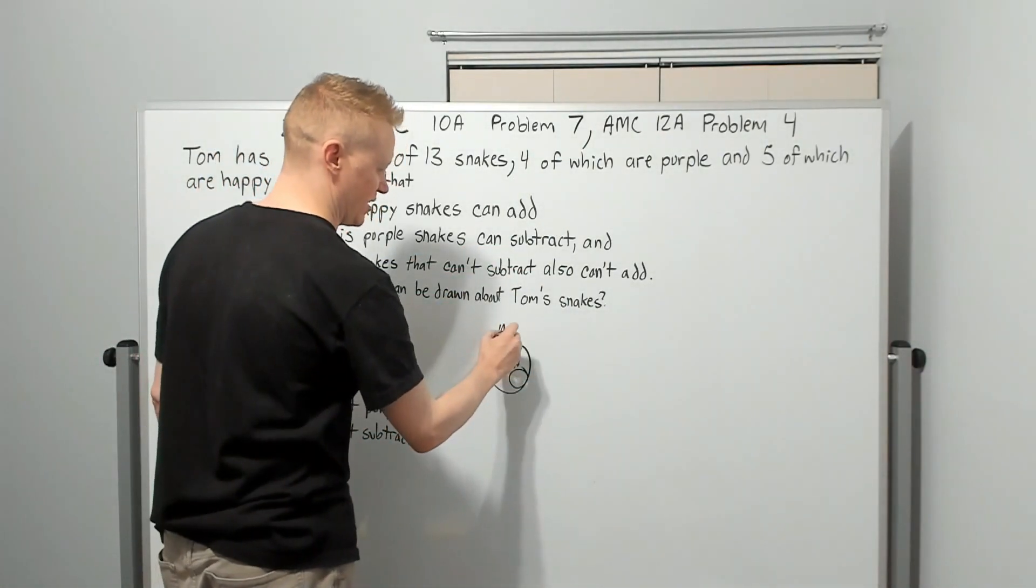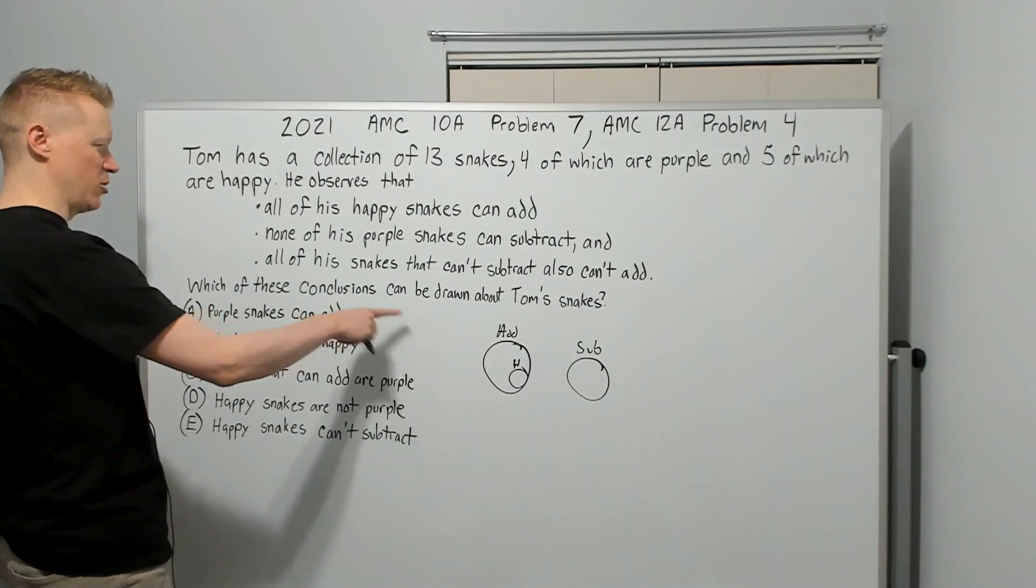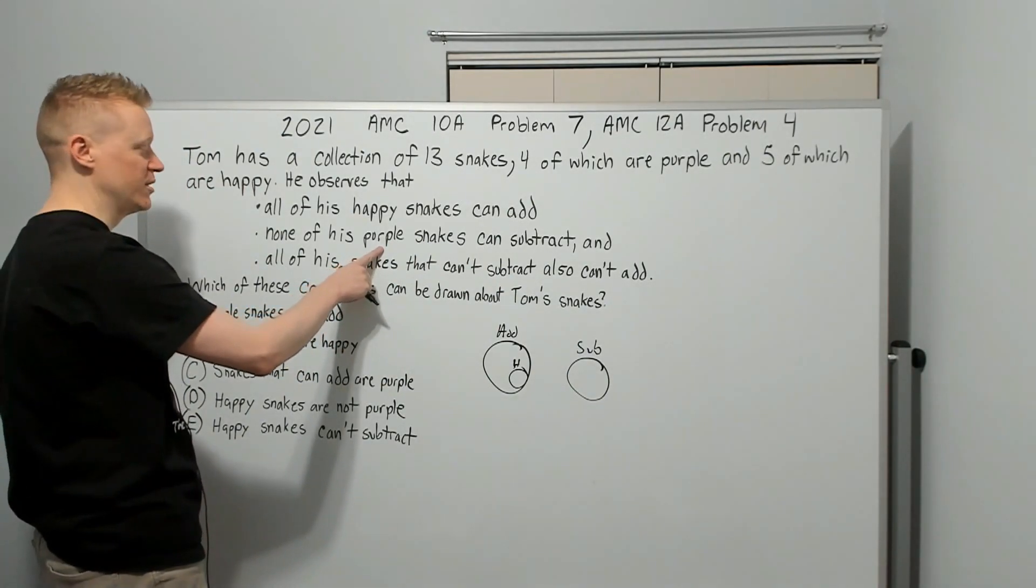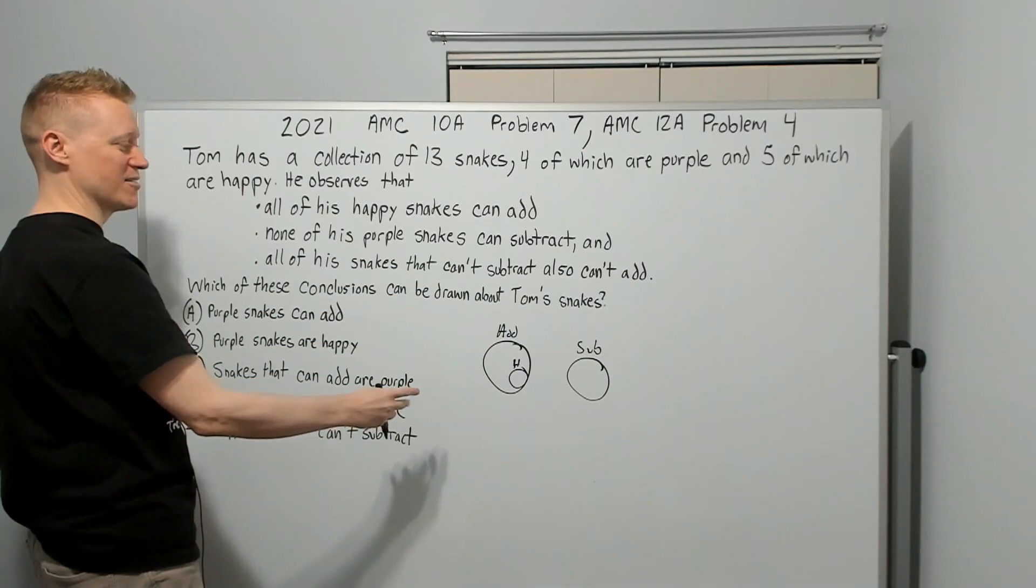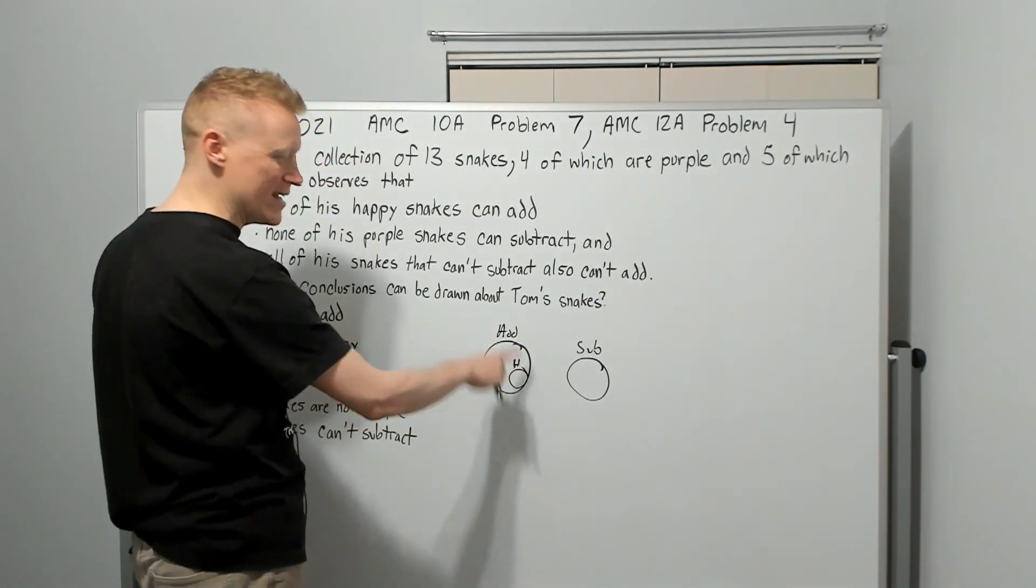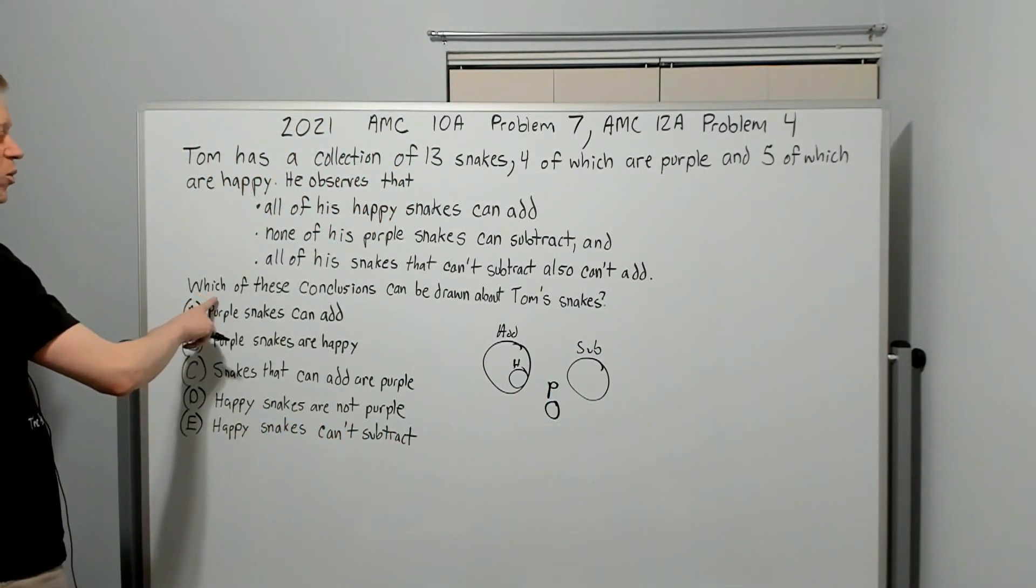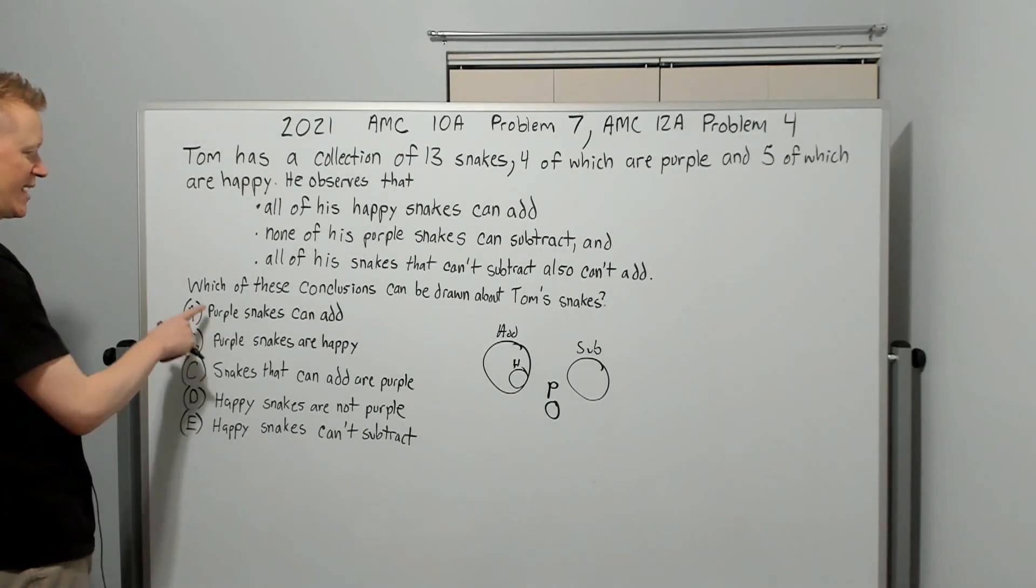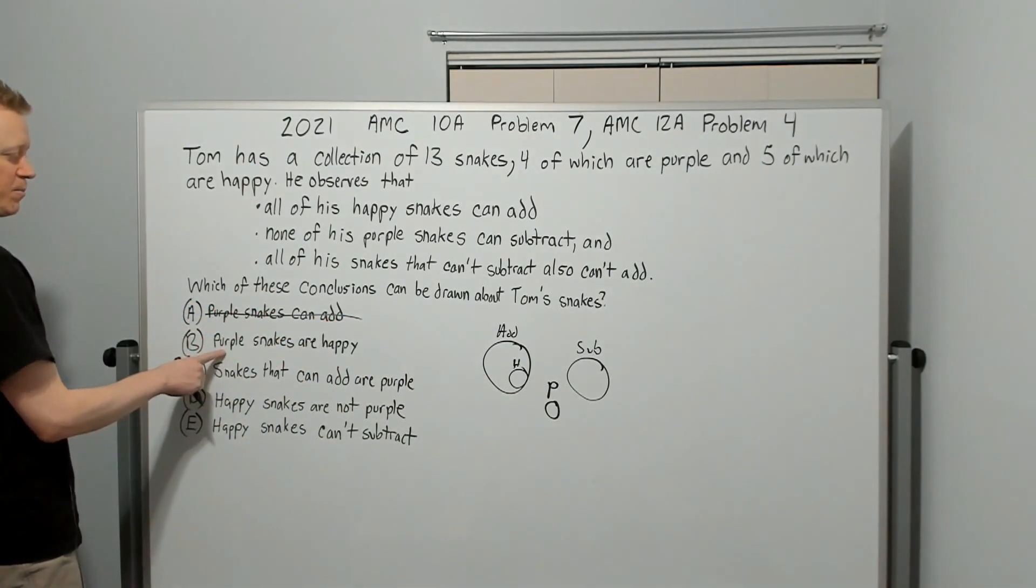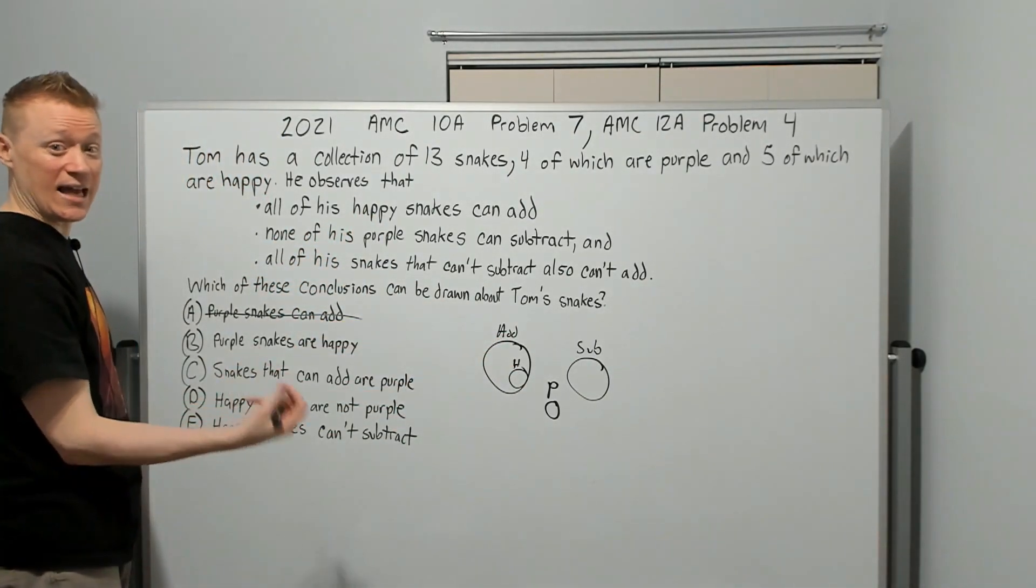None of his purple snakes can subtract. So let's say this is going to be the ones that can add. This will be ones that can subtract. And purple is not going to be in there. All of his snakes that can't subtract, which are the purple, some of them at least are purple. So the purple snakes are part of the group that can't subtract. And none of all of those snakes that can't do that also can't add. So purple cannot be inside of the add column at all. We'll put it here.